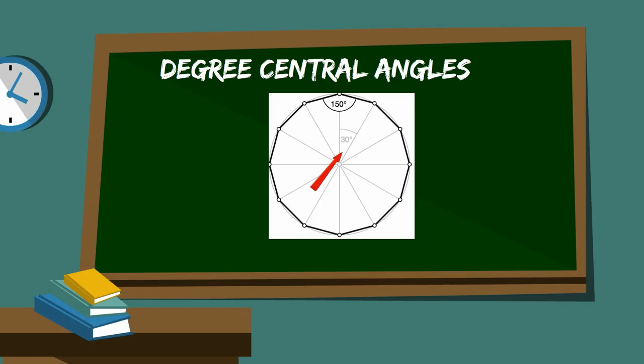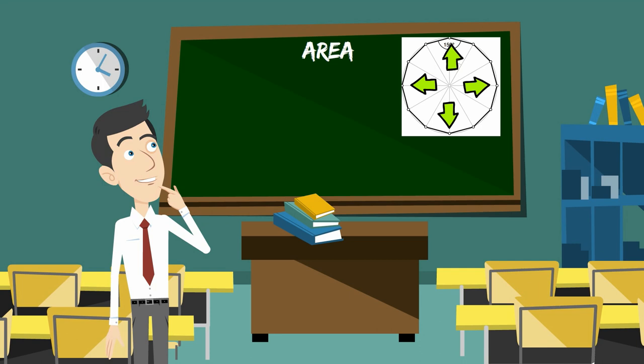Here is the math. You can find the measure of the central angles by dividing 360 degrees by 12.